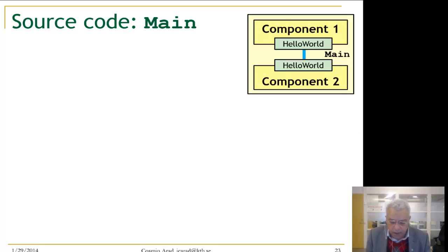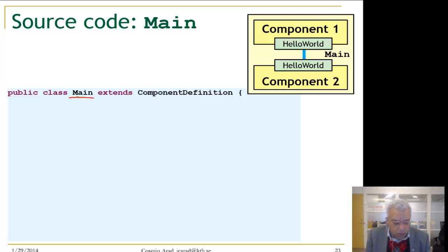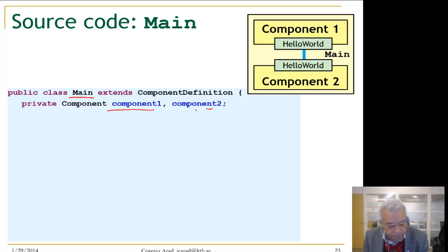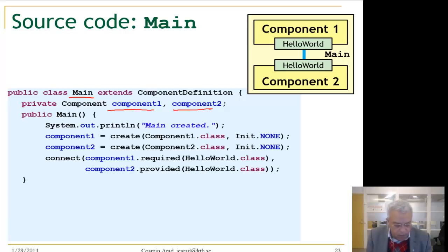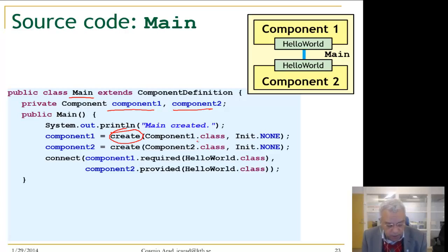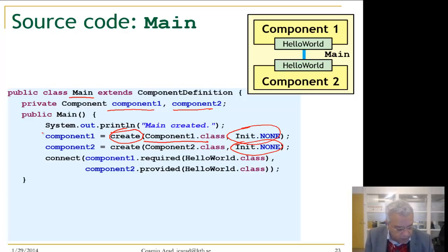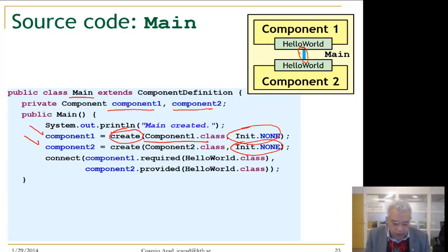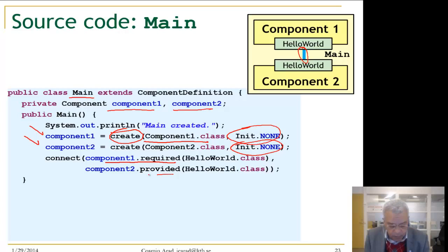We now put everything together by creating a main component. The main component creates two subcomponents: one of type component 1 and one of type component 2. This is how you create components in Compex — you specify the component type and provide initialization; in our case there is no initialization. Then you create a channel between the two components, providing directionality: component 1 has a required interface and component 2 has a provided interface. This is the main component running in one operating system process.